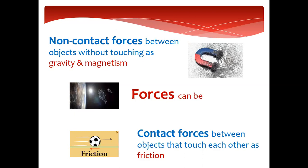Contact forces means that two objects touch each other — like friction. The two objects are touching each other, so there is contact between them. Between those two objects touching each other, they are making either high friction or low friction. So this completes the first lesson: push and pull, balanced and unbalanced, magnetism, gravity, friction, and contact and non-contact forces. I hope that you understood it well.